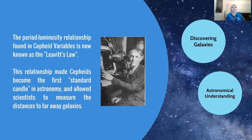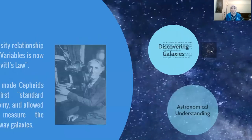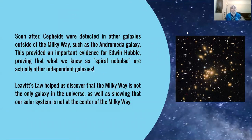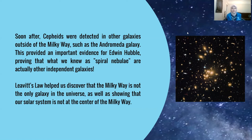The period-luminosity relationship found in cepheid variables is now known as Leavitt's Law. This relationship made cepheids the first standard candle in astronomy, allowing scientists to measure distances to far-away galaxies — something we didn't have before. Soon after, cepheids were detected in other galaxies outside of the Milky Way, such as the Andromeda Galaxy, providing important evidence for Edwin Hubble proving that what we knew as spiral nebulae are actually other independent galaxies.